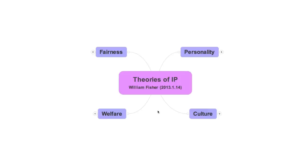Historically, there have been four main clusters of copyright theories. Theories of the first type focus on fairness. They argue that the law should be crafted to give authors what they deserve — in other words, the rights or rewards to which authors are morally entitled, either because they worked hard or because they have contributed importantly to our culture. Theories of this sort tend to be somewhat more popular and influential in common law countries, such as Great Britain and the United States, but they have grip everywhere.